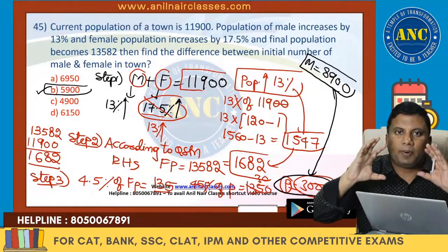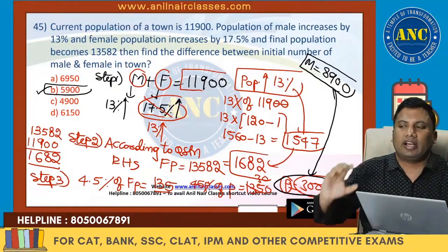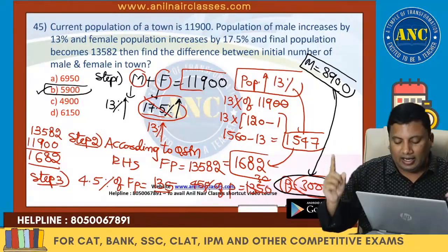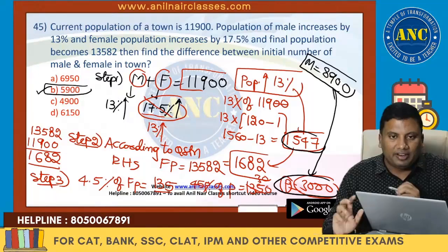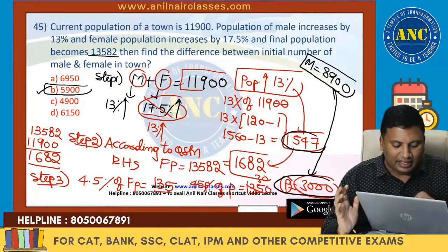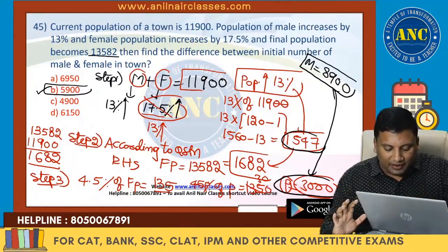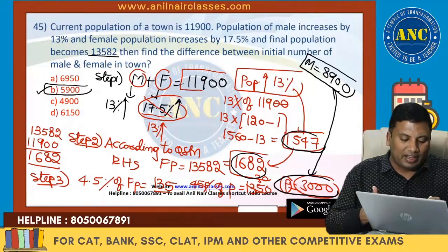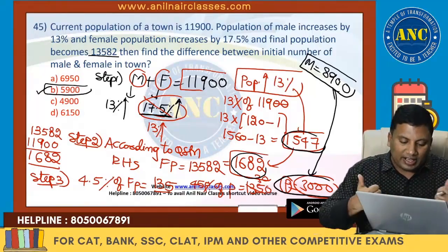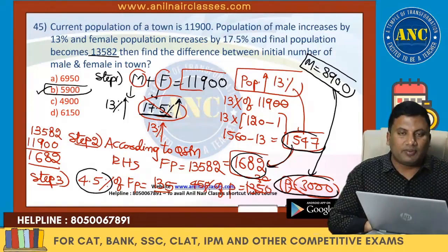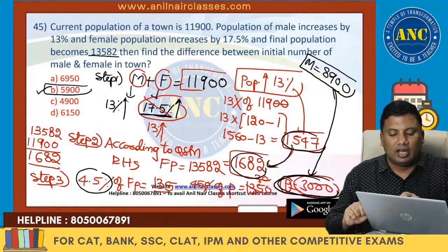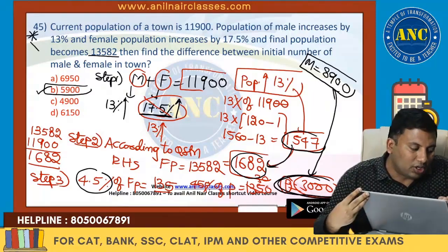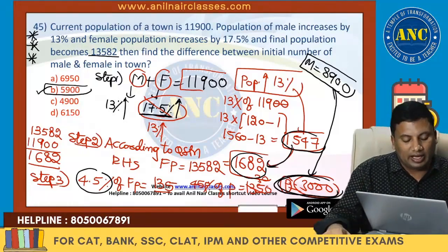Very beautiful question. Easy question if you understand the concept. A plus B equals K. A increased by X, B increased by X, K also increases by X. Male increases by 13 — if female also increases by 13, population increases by 13, giving 1547. But according to the question it is 13,582, so from 11,900 the increase is 1682. One is 1547, another is 1682, difference is 135. Why? Because I took 13 here — the extra is 4.5 percentage, equated with 135. So female population is 3000, male population is 8,900.